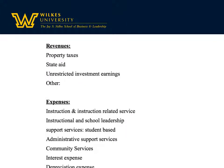For governmental agencies, it's called the statement of activities, and it's identical to the income statement. The only thing I'm showing you here is there are just different names for some of the revenues. A company might have sales or service revenue. Here, a school knows that their money comes from property taxes — so that's the revenue — or the money comes from state aid, so that's the name of the revenue account. There's unrestricted investment earnings, such as interest on some bond or bank account. We could also have restricted revenue in the same way.